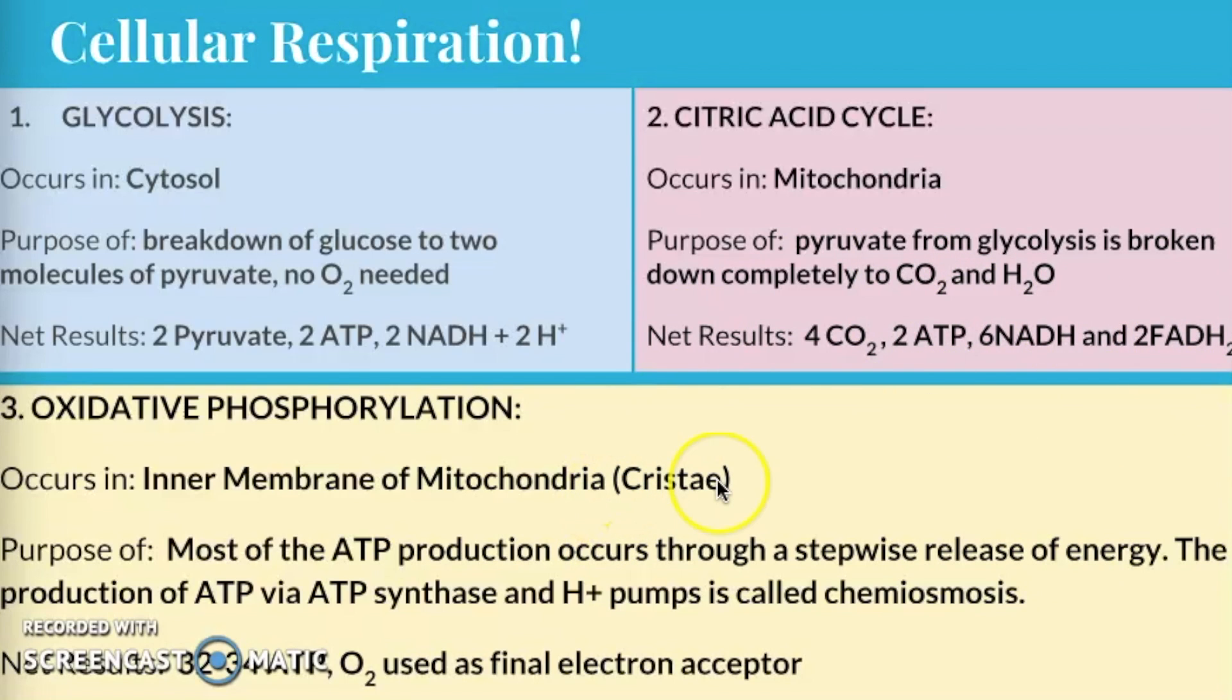Finally, when we go to our oxidative phosphorylation, this is going to occur across the inner membrane of the mitochondria. Most of the ATP production is going to occur here. And there's a stepwise release of energy through our electron transport chain. We have the production of ATP with ATP synthase, which is our enzyme, using these hydrogen ion pumps. This is called chemiosmosis. And in the end, we're going to end up with a lot of ATP. And again, oxygen is used here as the final electron acceptor.